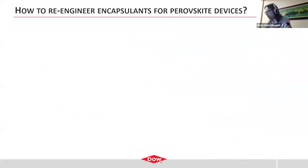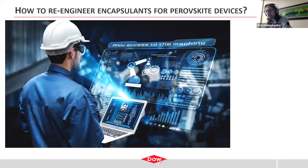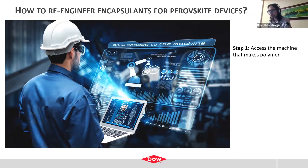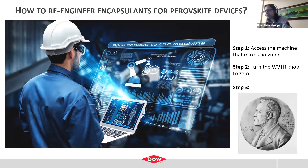If you know one thing about perovskites for PV, it's that they're extremely moisture sensitive. So this is an actual photo of me at work — like most people, I get to work, put my hat on, and access the machine. At Dow, the machine we're accessing is the one that makes polymer. This is a very simple process: we're just going to find the knob that controls WVTR and turn it to zero. That's all we need to do to get our encapsulants ready for this much more sensitive application space.